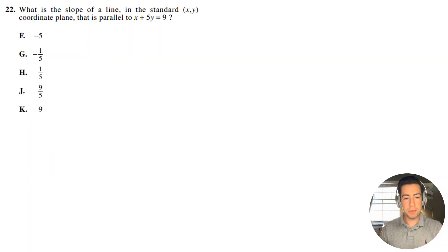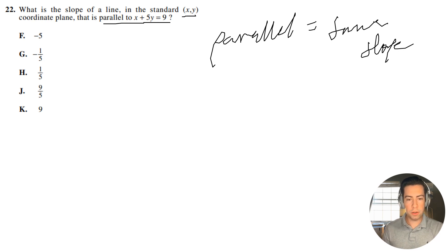All right, question number 22. Let's get right into it. They're asking us what is the slope of a line in the standard xy coordinate plane that is parallel to x plus 5y equals 9? Remember, if two lines are parallel, they have to have the same slope.